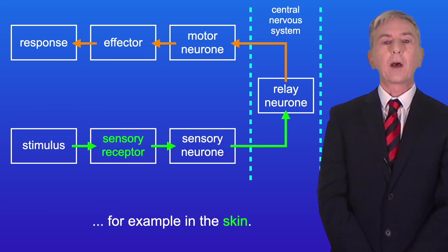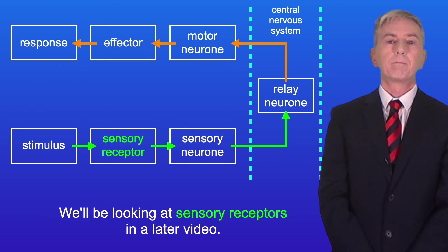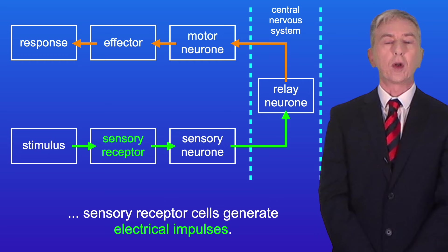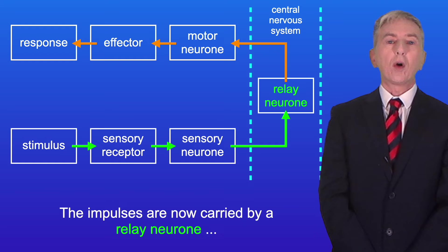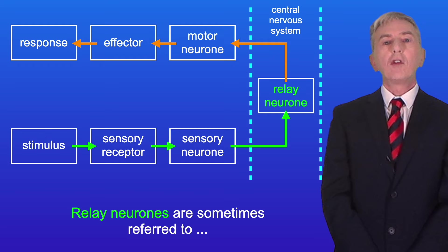Sensory receptors, for example in the skin, will be looked at in a later video. In response to a stimulus, sensory receptor cells generate electrical impulses. These impulses are transmitted by a sensory neuron to the central nervous system, for example the brain or spinal cord. The impulses are then carried by a relay neuron in the central nervous system — relay neurons are sometimes referred to as intermediate neurons.